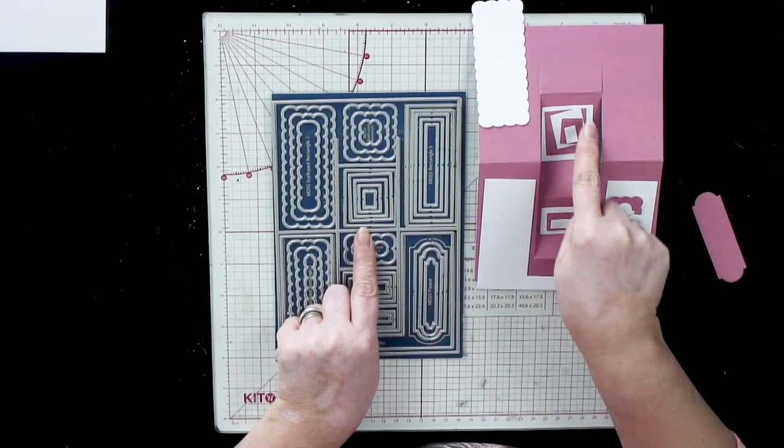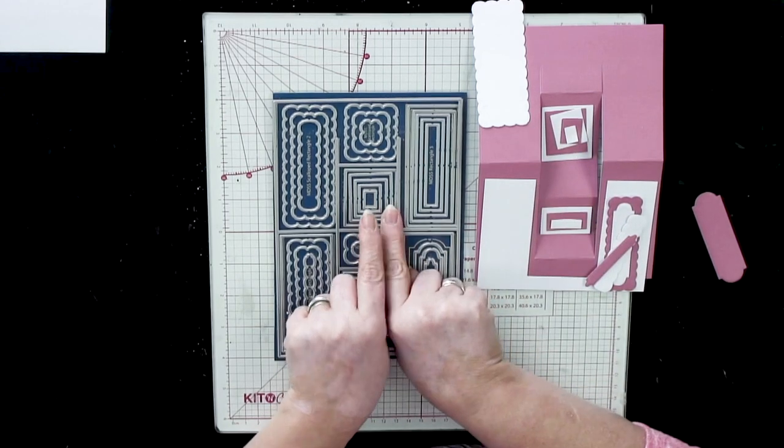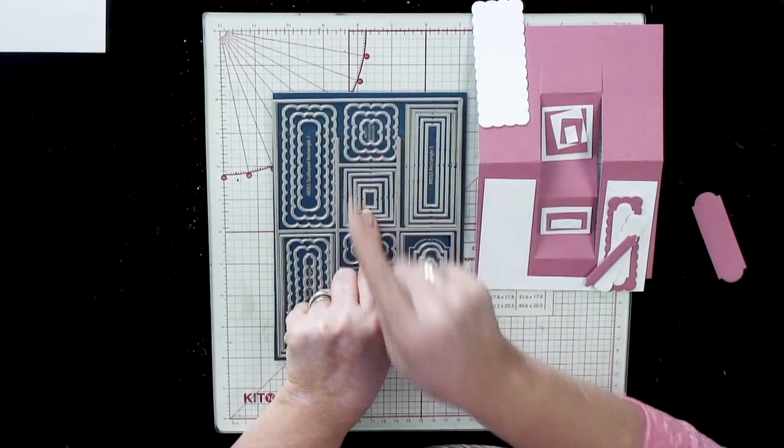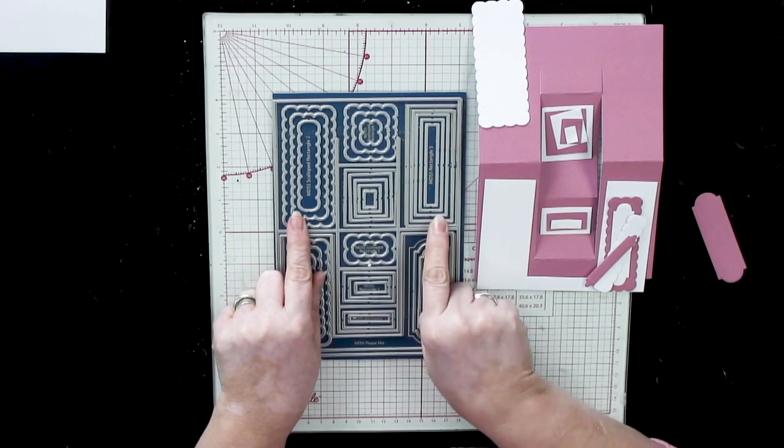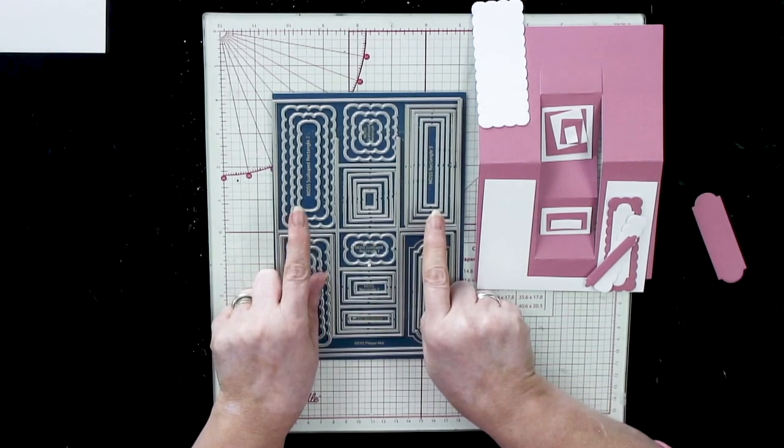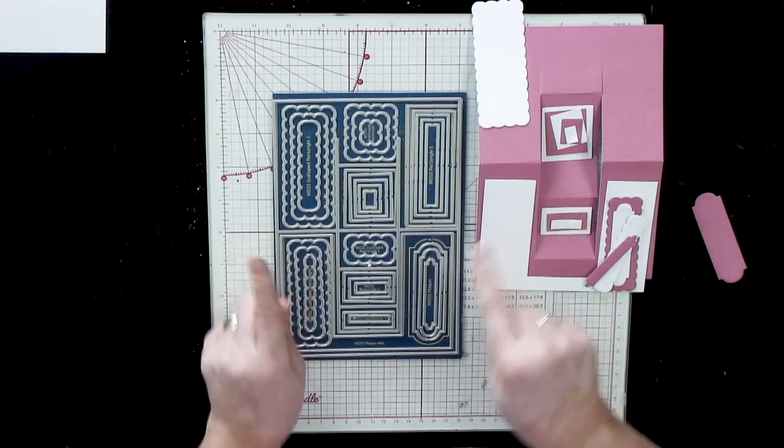These here are my little rectangles but again we've got similar size with a scalloped edge. We've got the same mirror imaged so you can alternate these again exactly as I did.